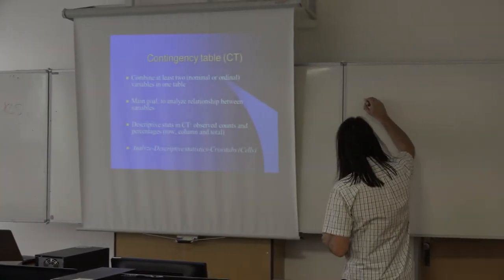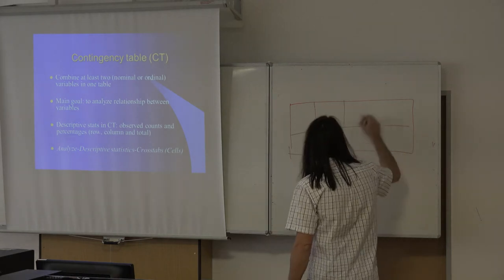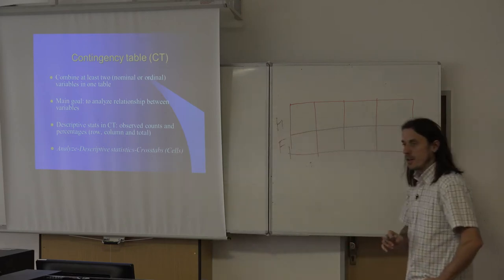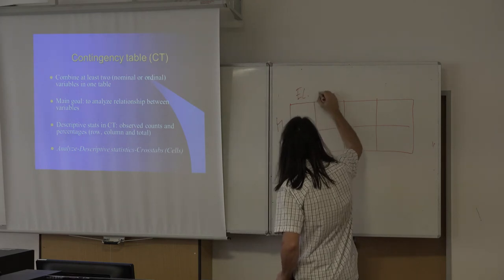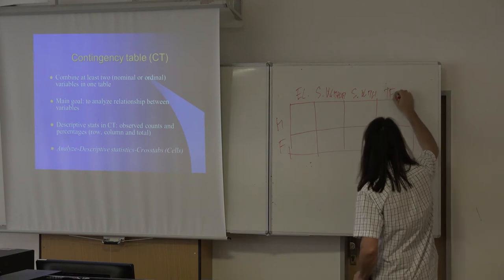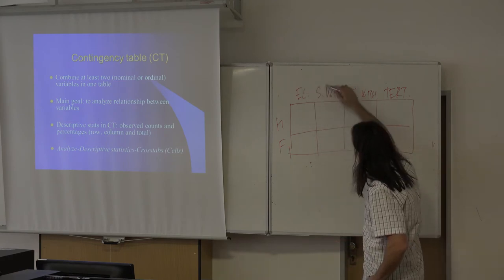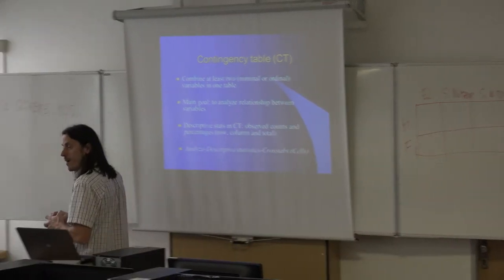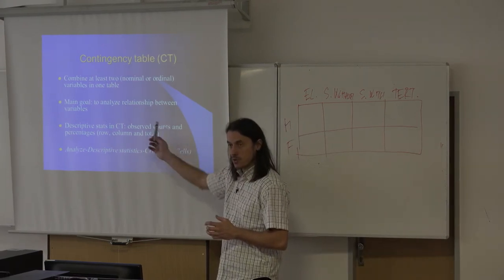Let's start with a very simple contingency table. We will use gender as the row variable (male and female) and educational level for columns — elementary, secondary without a diploma, secondary with a diploma, and tertiary. Gender categories create the rows, and educational categories create the columns. The default output for contingency tables in statistical software is observed counts.